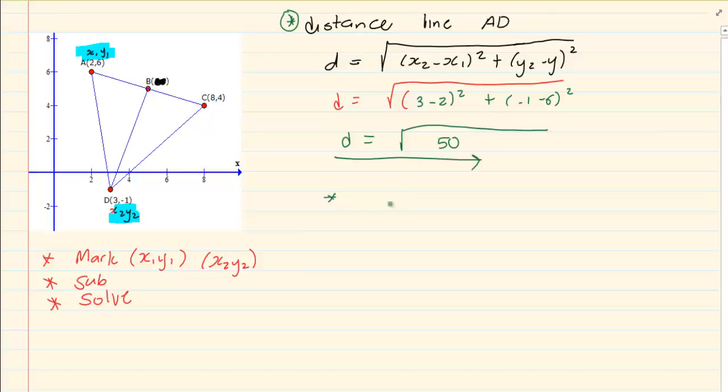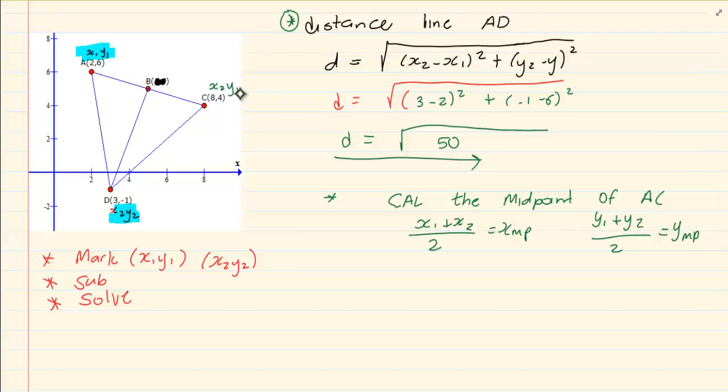The next thing is calculate the midpoint of AC. Now the formula for midpoint is x1 plus x2 over 2 is equal to the x of the midpoint. And y1 plus y2 over 2 is equal to the y of the midpoint. So since we've already have an x1 y1 there what we do is we'd mark this as x2 y2. Then we're going to substitute.